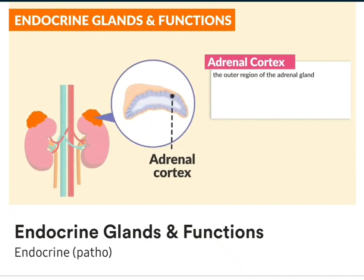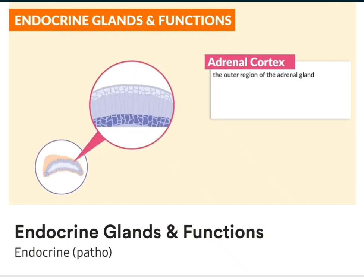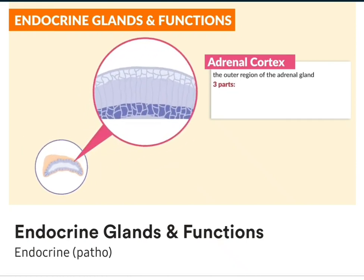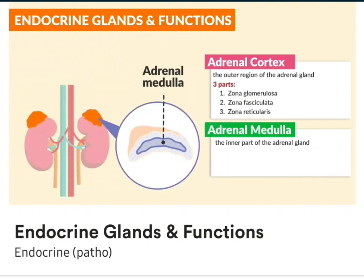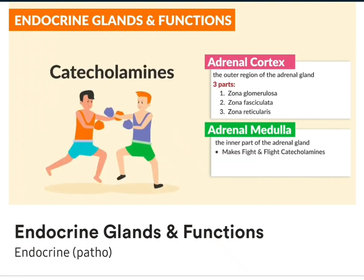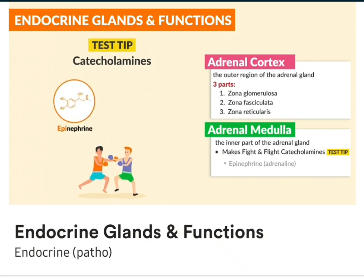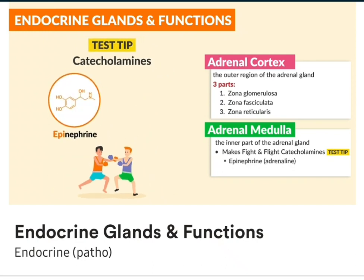Moving on to the adrenal cortex. This is the outer region of the adrenal gland, and it's divided into three separate zones: the zona glomerulosa, the zona fasciculata, and the zona reticularis. The adrenal medulla is the inner part, or the middle, of the adrenal gland. And this makes the fight-and-flight catecholamines — epinephrine, called adrenaline, and norepinephrine, called noradrenaline.